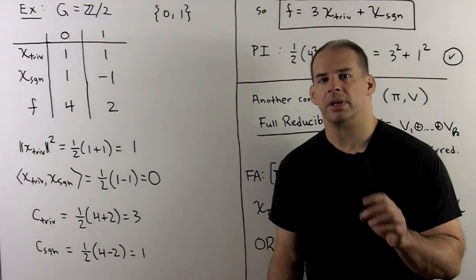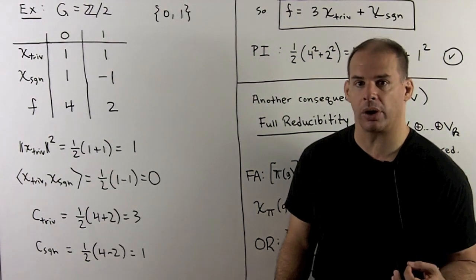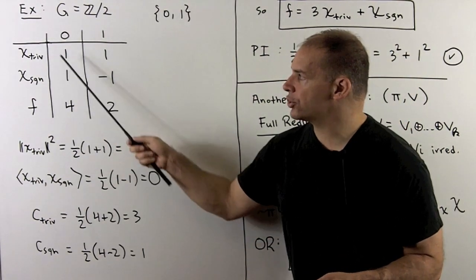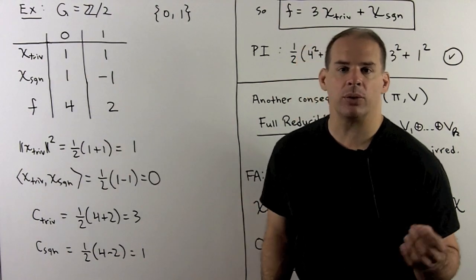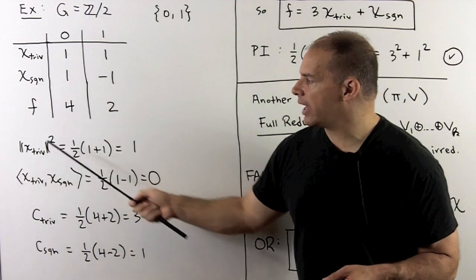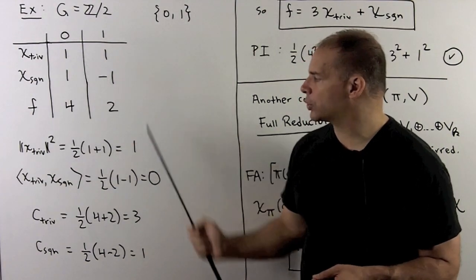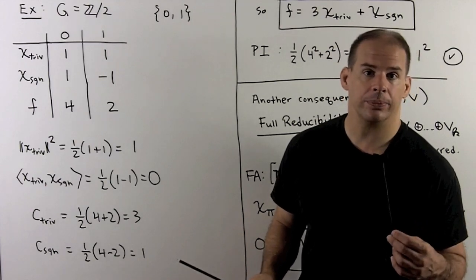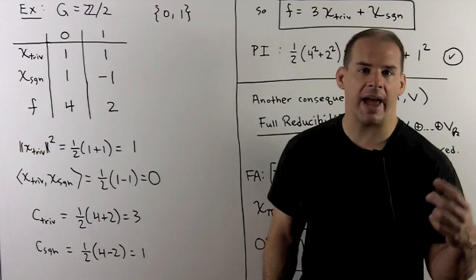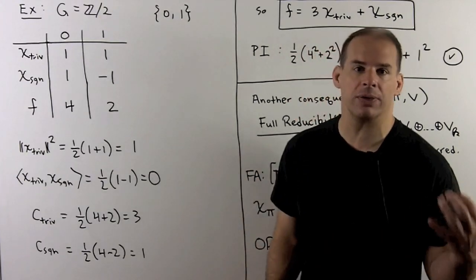For an example, let G equal Z mod 2, with 0 and 1 under addition, where 1+1=0. We set up the character table with two characters: trivial and sign. If we take the length squared of the trivial character, we get one-half times (1 squared plus 1 squared) equals 1, so it's a unit vector. Checking trivial against sign, we get one-half times (1 minus 1) equals 0. So these are orthogonal.